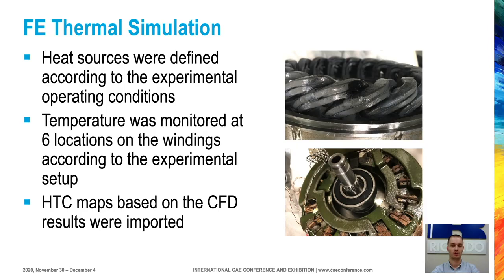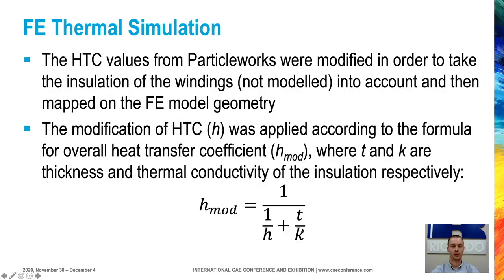The last important input was obviously the HTC map from the CFD simulation, mapped onto the surfaces. However, we could not use the HTC values directly from CFD because there is some coating on the windings that we did not model explicitly in the FE model. So we used the well-known formula for overall heat transfer coefficient and introduced an additional thermal resistance from the coatings — using the known coating thickness and thermal conductivity to reduce the HTC values accordingly.